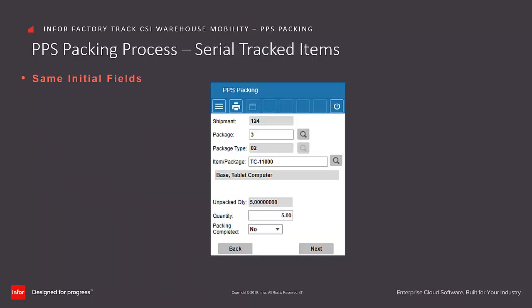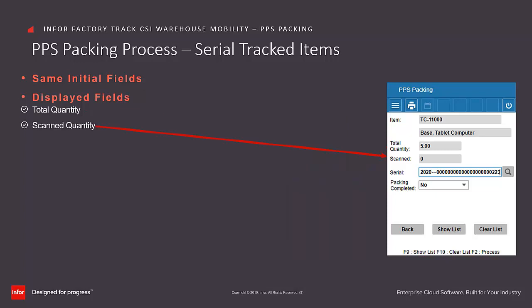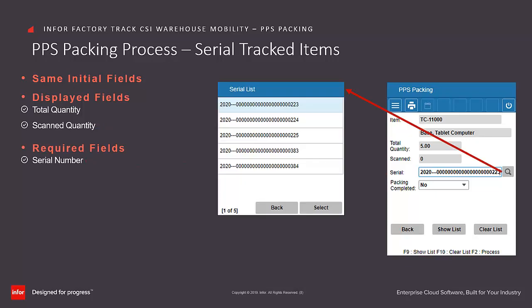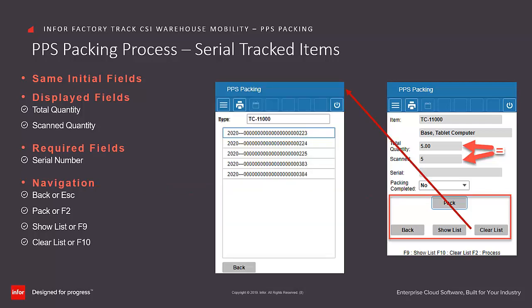To process PPS Packing for serial tracked items, it is a similar process with additional serial-specific fields. The quantity entry will control the next process by defining the scan quantity required to complete the process, which becomes the total quantity value used on the serial selection processing form. The Scan Quantity field indicates the number of serial numbered items captured so far. You can enter, scan, or search the serial numbers for the items being packed. Once the scan quantity equals the total quantity, the processing option is enabled. Click on Pack to process PPS Packing, or use Show List or Clear List to remove the serial numbers captured in the process so far.